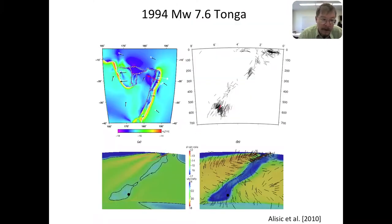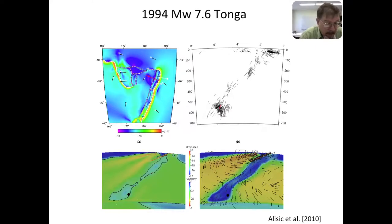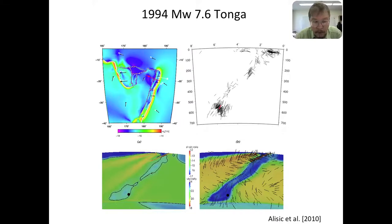Generic models from my group and others around the world have shown this physics of subduction, but now people will hopefully appreciate this as a very important process because we have models that also match the surface kinematics. This opens up lots of observations — strain rates, orientations of focal mechanisms compared to principal stresses — that help constrain these models.